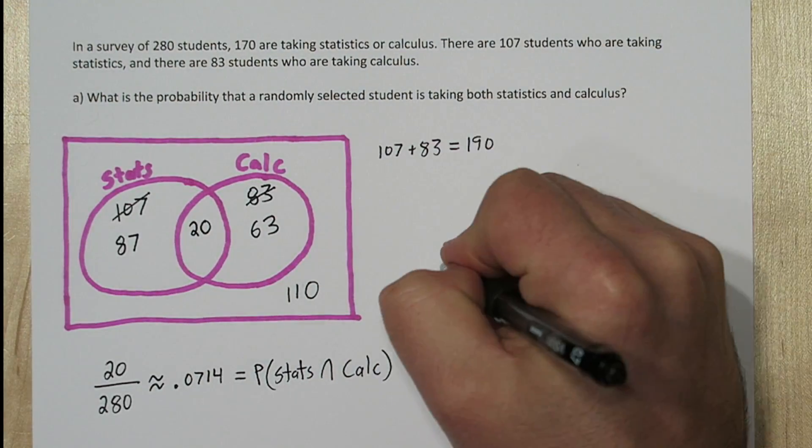Now some people prefer to use two-way tables instead of Venn diagrams. A two-way table has the same four values as the Venn diagram. You can use whichever one you're more comfortable with.